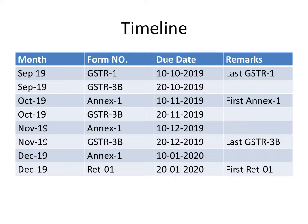Now let's look at the timeline. For September 2019, we have to file GSTR-1 on the 10th of October — that is going to be our last GSTR-1. On 20th November, we have to continue filing GSTR-3B. For November, we have to file Annexure 1, and on 20th December we have to file our last GSTR-3B. For December 2019, Annexure 1 will be filed on the 10th of January 2020 and our first Return 1 will be filed on the 20th of January 2020.